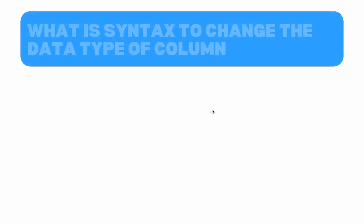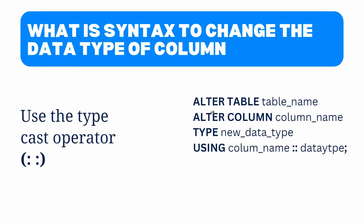Another way to change the data type of a column is using the typecast operator. We follow the same syntax but at the end we add the keyword USING with a typecast operator, which accepts two values — the column name and the data type of that column. Before the typecast operator we specify the column name, and after it we specify the new data type of that column.